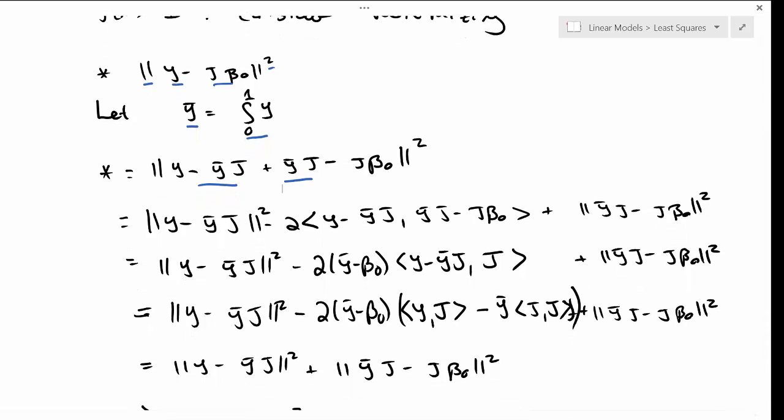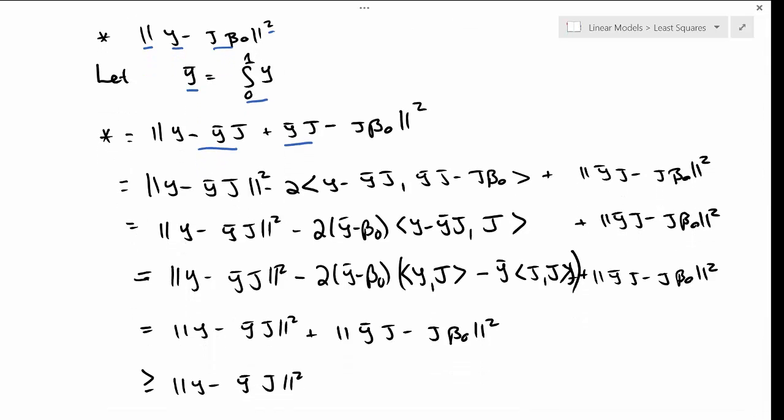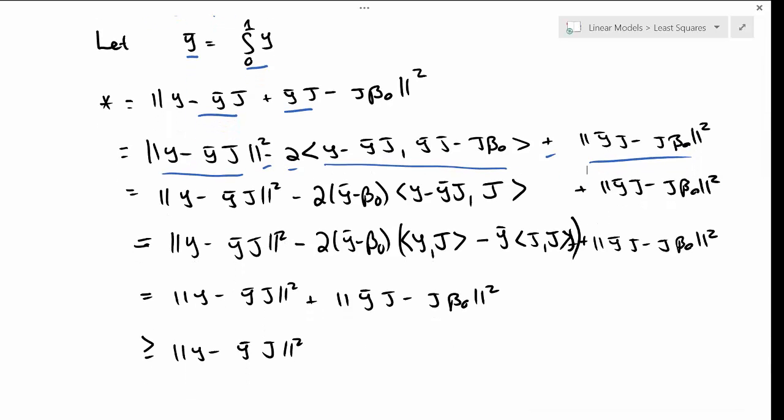Then what I'm going to do is subtract and add y bar times this unit function j. Because the norm satisfies and the inner product satisfies all the standard properties that it does in our standard real valued vector space, I have y minus y bar times j squared minus twice this inner product plus y bar j minus j beta_0 quantity squared.